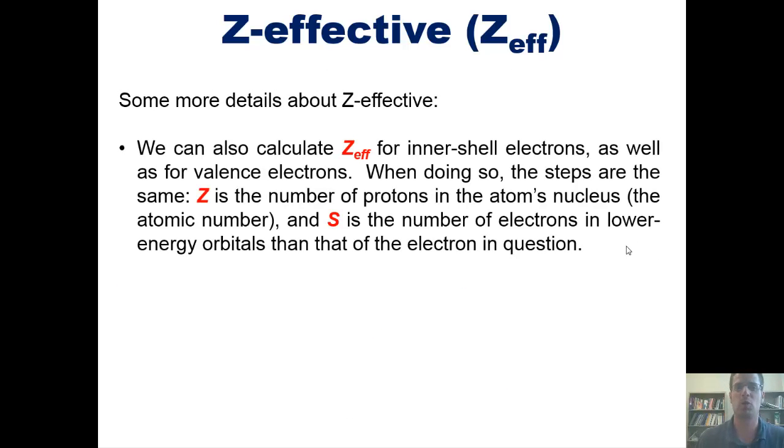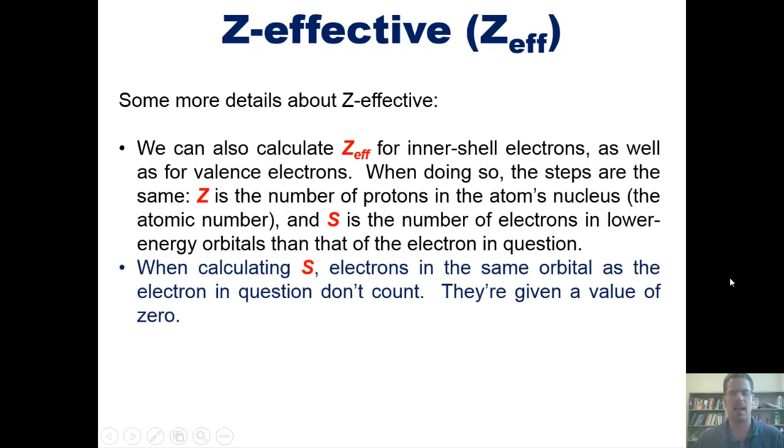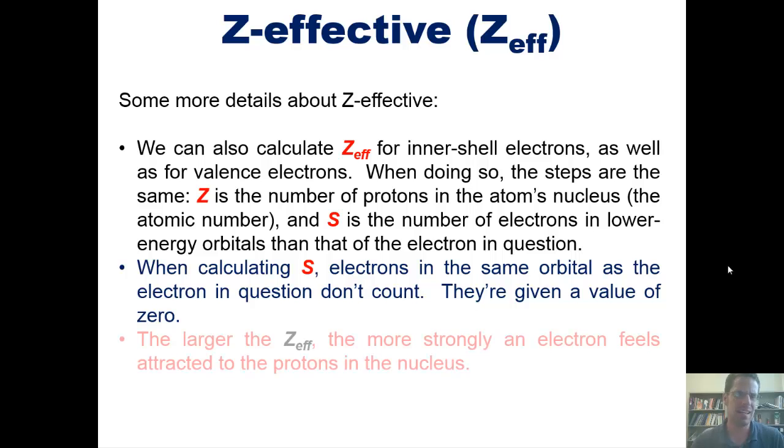We can also calculate Z-effective for inner-shell electrons, just like we would for valence electrons. When doing so, the steps are the same. Z is always equal to the number of protons in the atom's nucleus, which is always the particular element's atomic number. And S is the number of electrons in the orbitals that are lower in energy than that of the electron in question. Also, when calculating S, electrons in the same orbital as the electron in question don't count - they're given a value of 0.